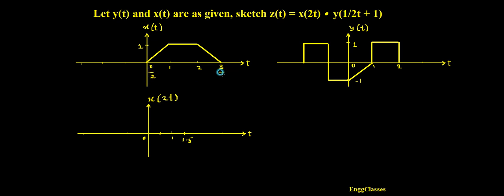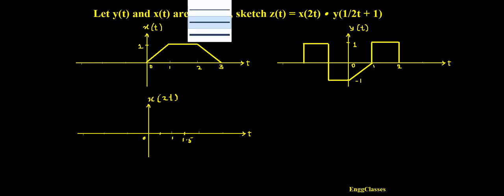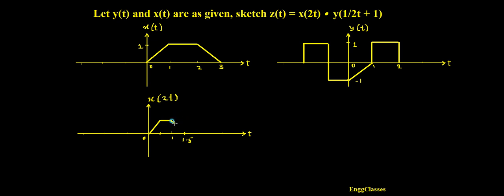The limits are 0 divided by 2 and 3 divided by 2, so the new signal exists from 0 to 1.5. The shape of the signal remains the same; it only gets compressed by a factor of 2. The amplitude is still 1 because we haven't done anything to the dependent variable. This completes the first task of sketching x(2t).